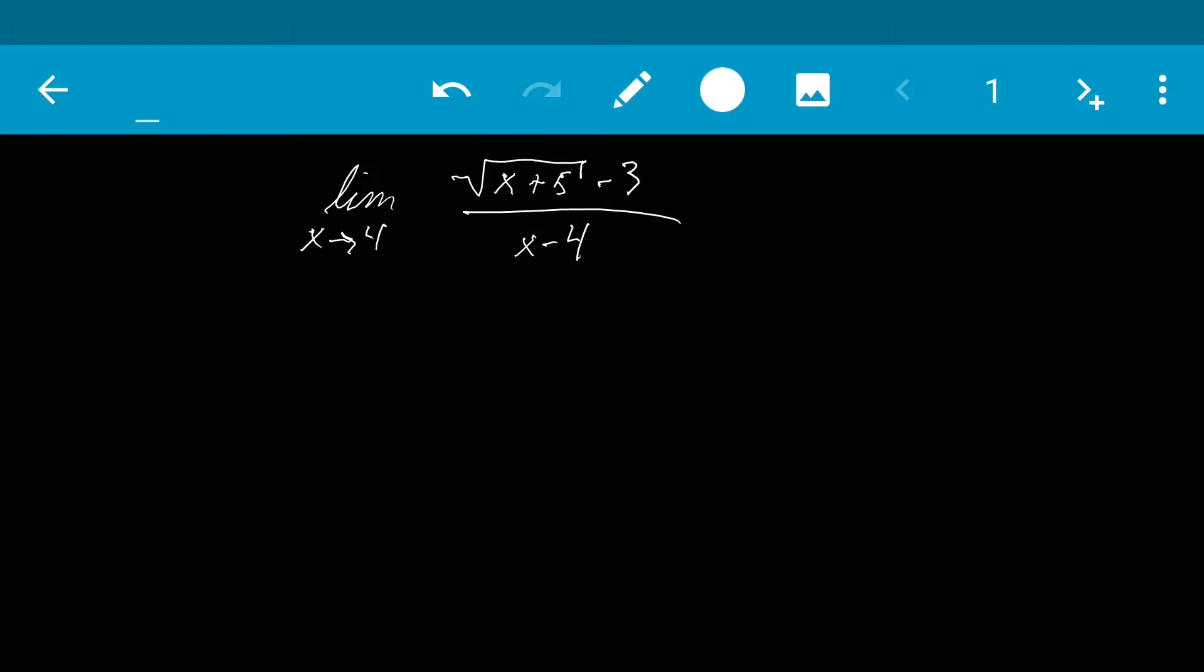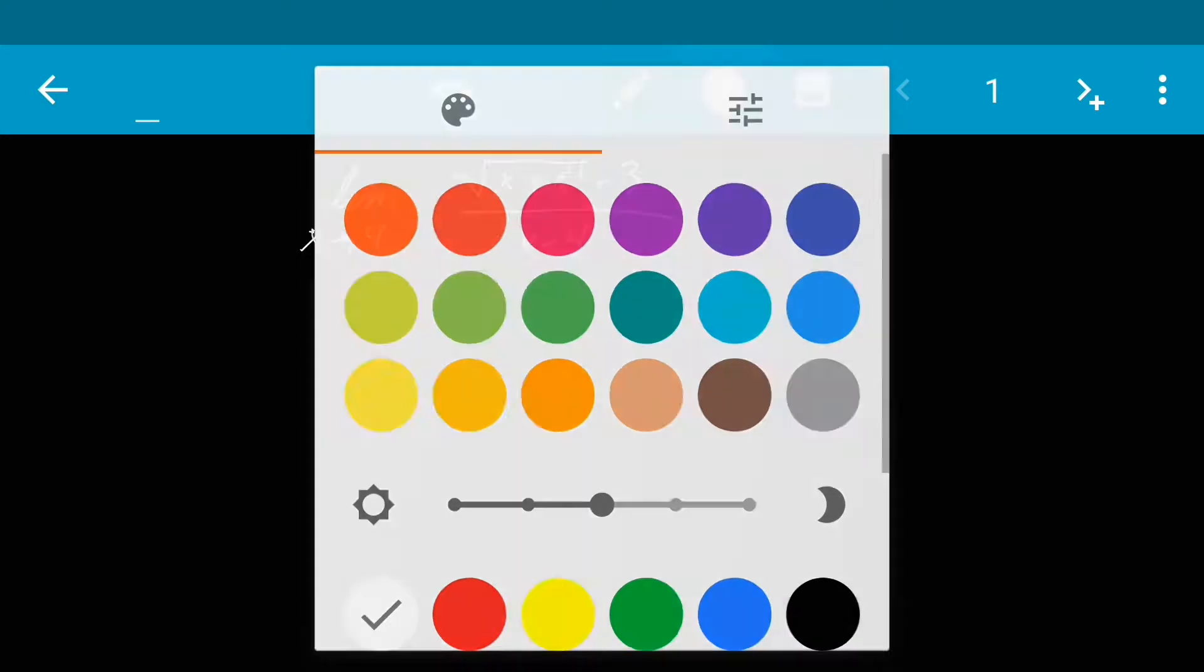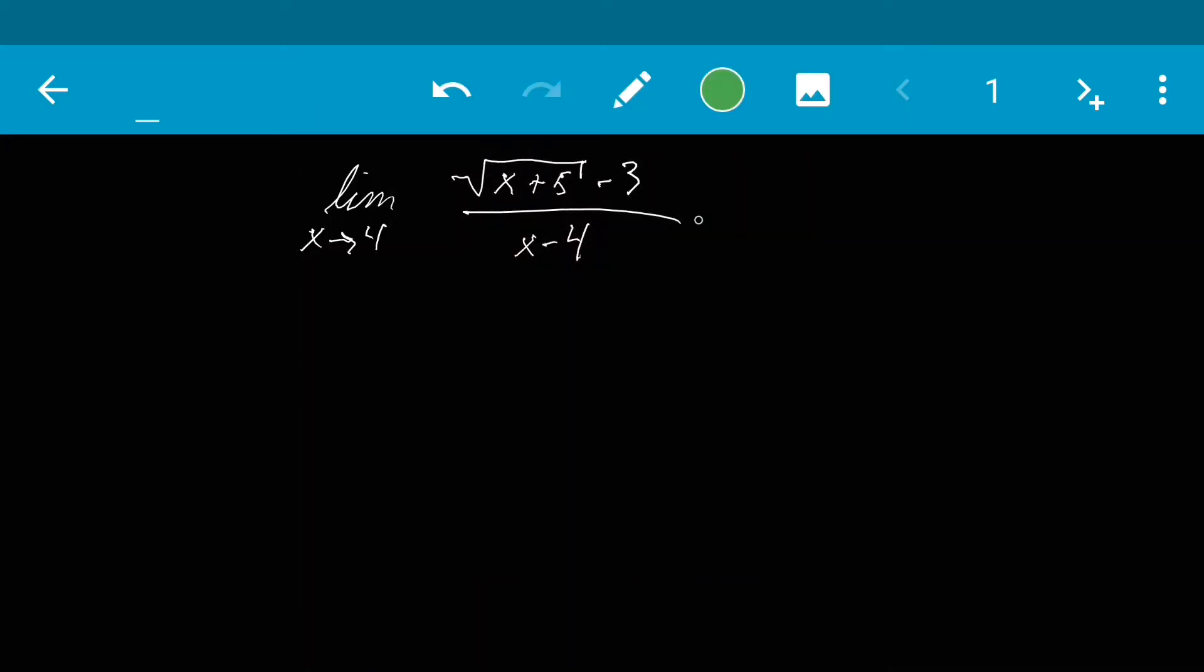In order to do that what we're going to do is we're going to multiply the numerator and the denominator by the conjugate of the numerator. So we'll do that in a green color. So we've got the square root of x plus 5 plus 3 over the square root of x plus 5 plus 3. That's our conjugate.